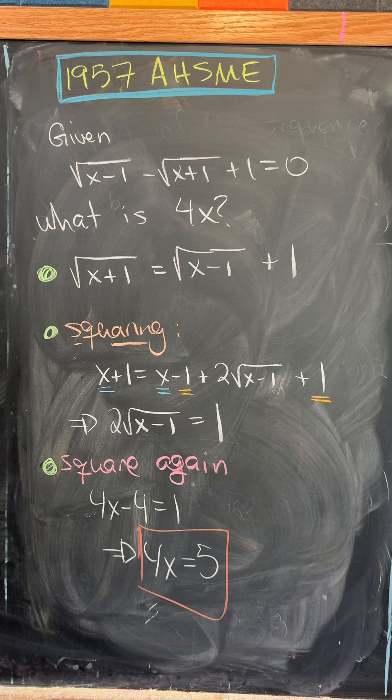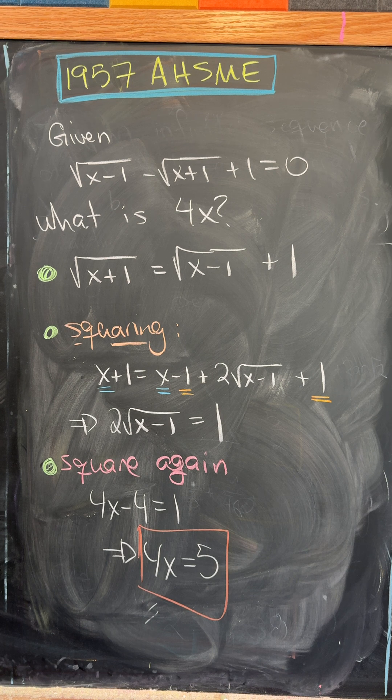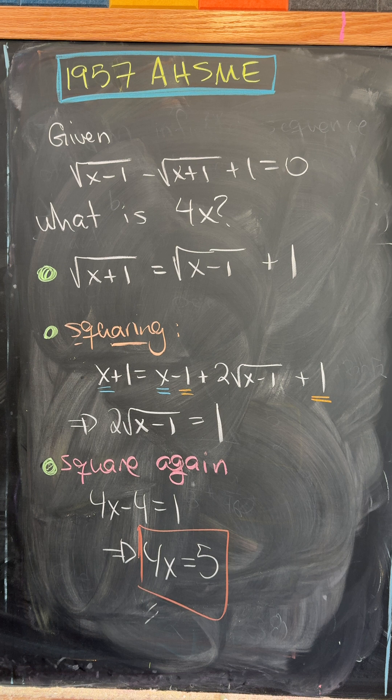So we have 2 times the square root of x minus 1 equals 1. Now we'll square this again, leaving on the left-hand side 4x minus 4 and on the right-hand side 1, and thus 4x is equal to 5.